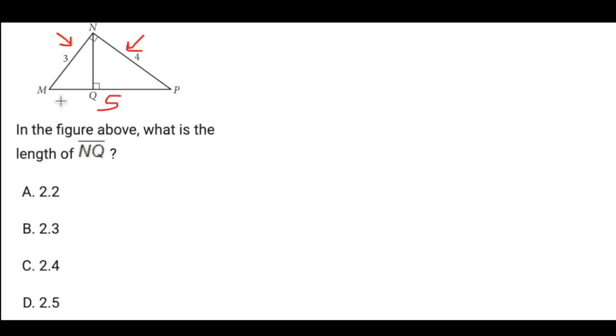So if we imagine that our base is 4, our height, because of this 90 degree angle at N would be 3, right? So the formula for the area of a triangle is base times height divided by 2. So then we have 3 times 4 divided by 2, also known as 12 divided by 2. So our area is 6. How is this going to help me get NQ?